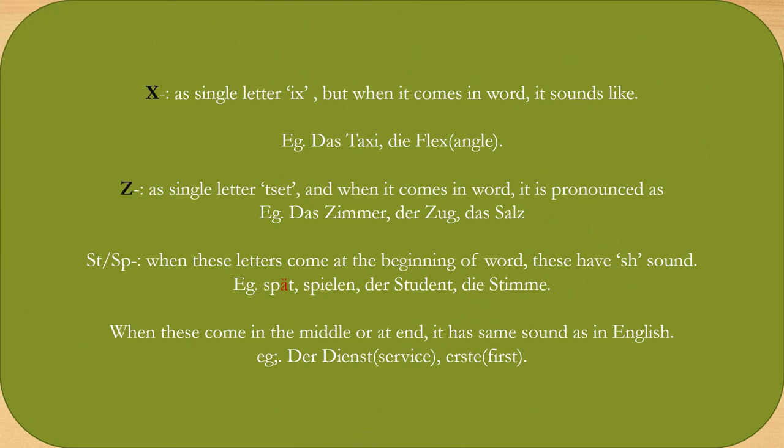The letter X in German has the 'Ix' sound, but when it comes in a word, it is pronounced the same as in English. For example: Taxi, Flex. The letter Z: as a single letter in German, it has the 'Zet' sound, and when it comes in a word, it is pronounced like Tz. For example: Zimmer, Zug, Salz.